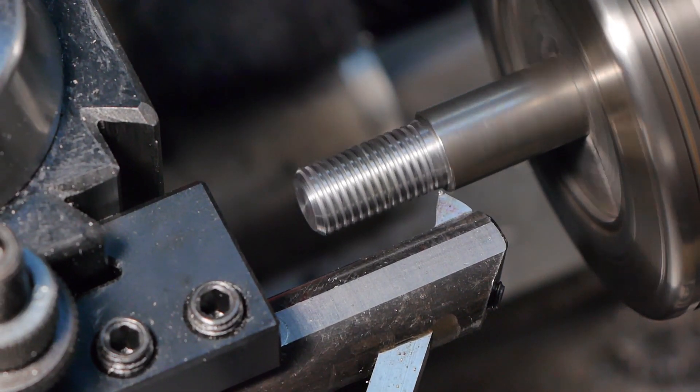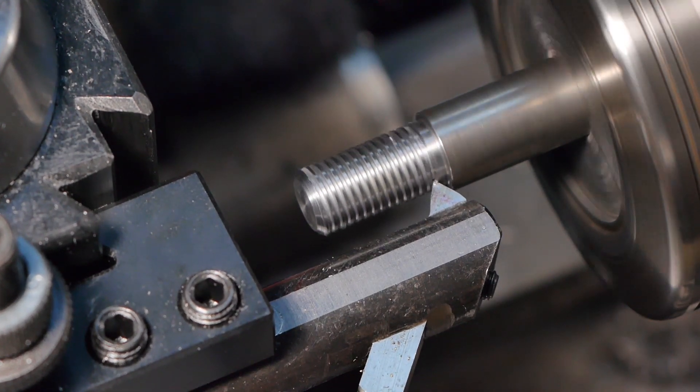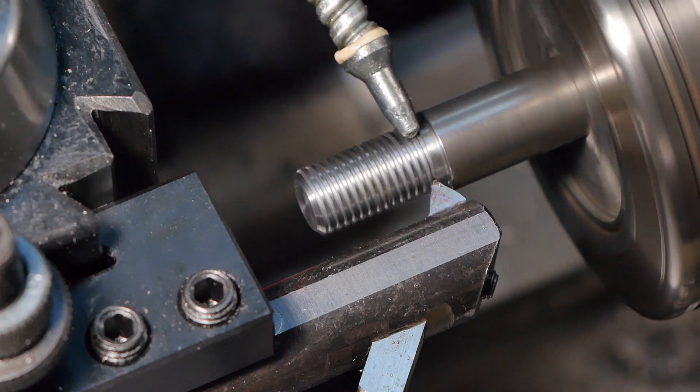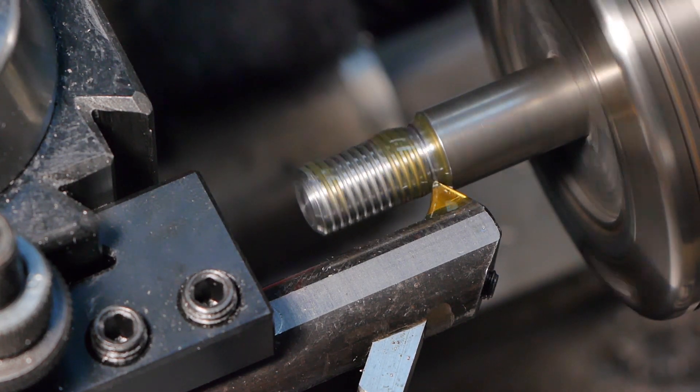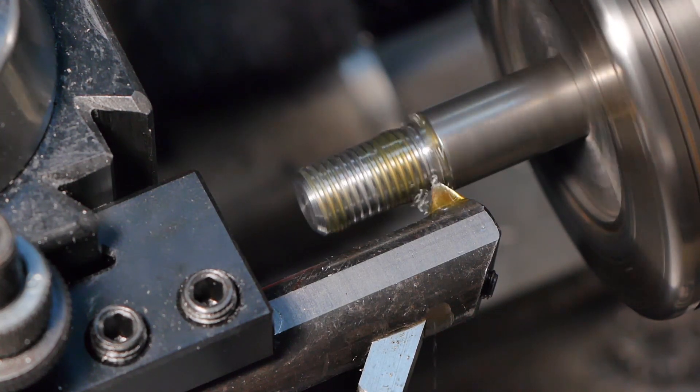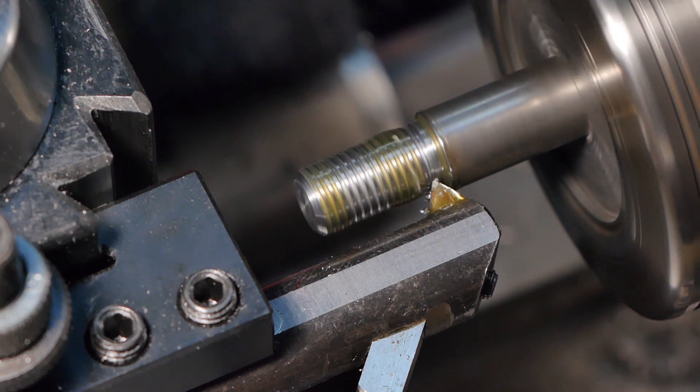Note that due to the limited rigidity of the threading bar, this method is limited to relatively short threads and cannot be used at all if the work needs to be supported by the tailstock. Now most of the threading I do is on short sections and usually doesn't require tailstock support, so I use this technique a lot.